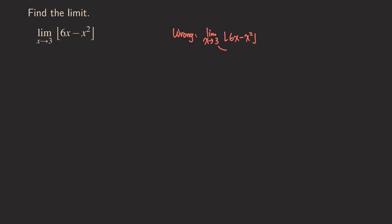If we plug in three directly for x right here, then what happens? We are going to get the floor function of six times three minus three squared. We get the floor function of 18 minus nine, and then we get the floor of nine, which is just nine. But that is the wrong answer here.